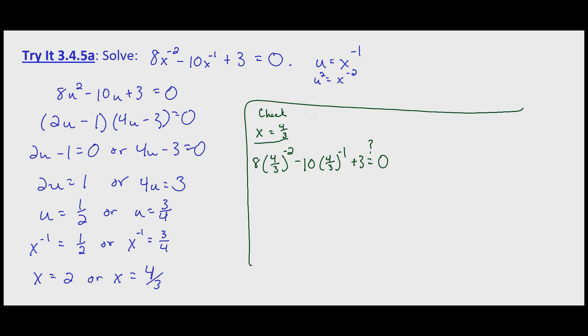So with 4 thirds to the negative 2 that's the same thing as 3 fourths squared. So that's going to be 8 times 9 sixteenths. Now you could look at it as 1 over 4 thirds squared, or you could just flip it and square it. Minus 10 times 3 fourths plus 3. Does that equal 0? Well 3 fourths squared, that's 8 times 9 sixteenths, minus 10 times 3 fourths. That's going to simplify just a little bit. So we're going to make the negative 10 times 3 fourths negative 15 halves, and then we'll go ahead and make the 3, 6 halves as well.